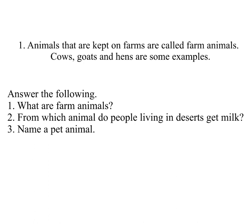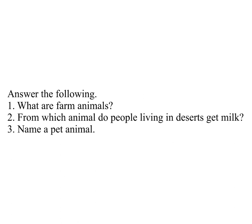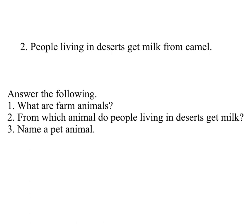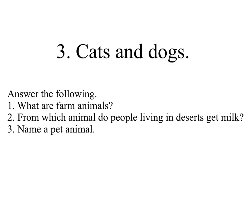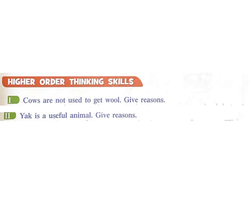Answer the following: 1: What are farm animals? Answer: Animals that are kept on farms are called farm animals. Cows, goats, and hens are some examples. 2: From which animal do people living in deserts get milk? Answer: People living in deserts get milk from camels. 3: Name a pet animal. Answer: Cats and dogs.